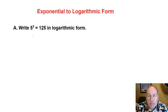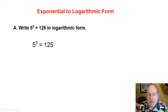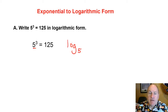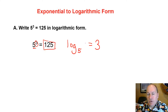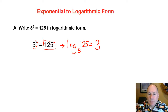Now let's look at the reverse: rewriting from exponential to logarithmic form. We have 5 to the third equals 125 in exponential form, and we want logarithmic form. The base is 5, so it becomes log base 5. The power is our answer, and 125 is the input for the logarithm. So it's rewritten as log base 5 of 125 equals 3.